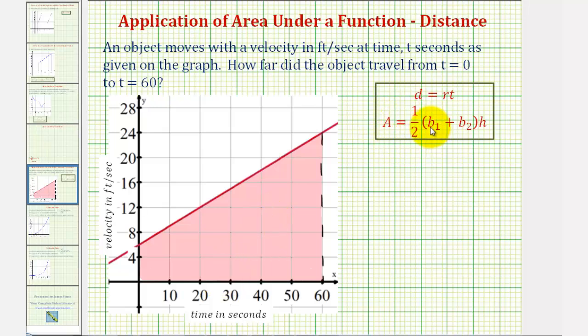Area equals one-half times the quantity b sub one plus b sub two times h to determine this area and therefore the distance traveled, where b sub one and b sub two are the two bases with the length of the two parallel sides and h would be the height.